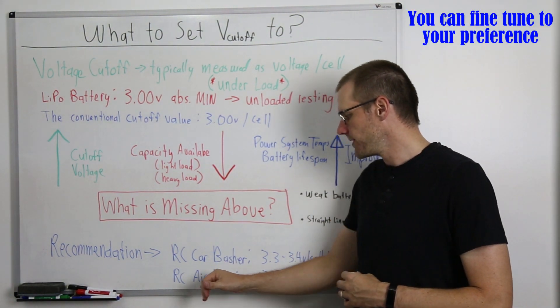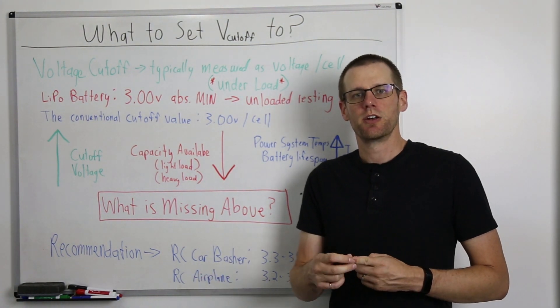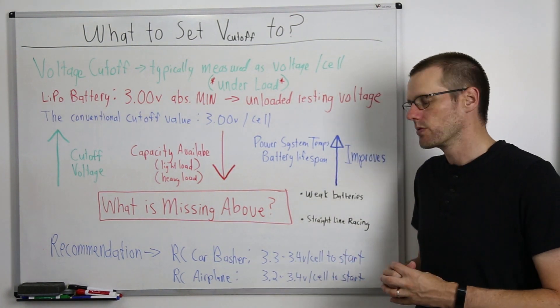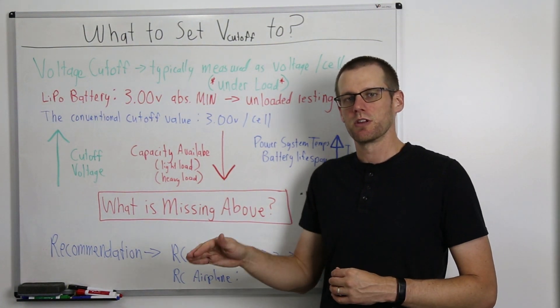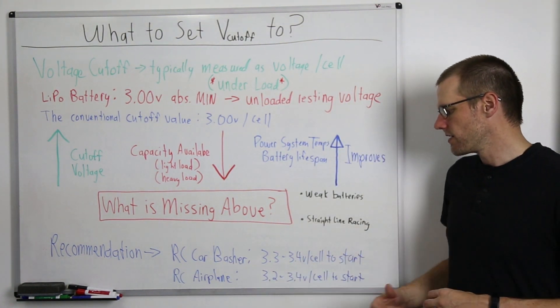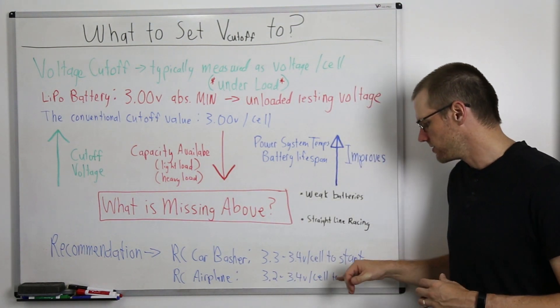And lastly, if you have a radio control airplane, I define here a radio control airplane as a high wing trainer style airplane where if you cut all power to the motor, that airplane would be easily able to glide down so that you are able to land. I'd recommend somewhere around 3.2 to 3.4 volts per cell to start.